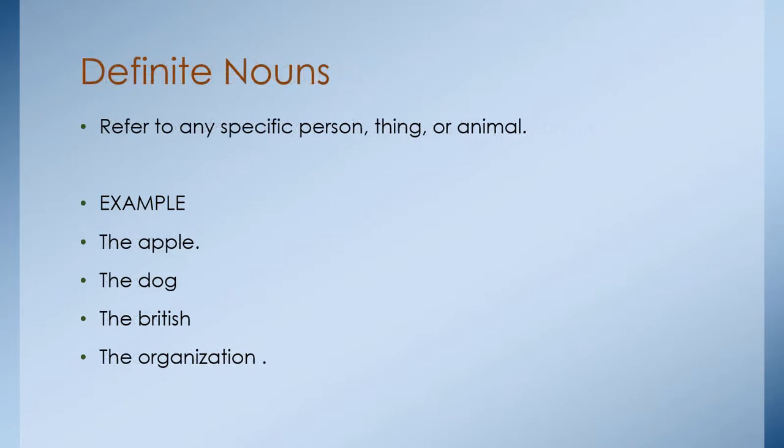Definite noun refers to any specific person, thing or animal. For example, the same example, but if I told you THE apple is because I am showing you or I am specifically telling you something about the apple that we are talking about. That dog. It could be your dog, my dog, but it could be a specific. That British or the organization. We are talking about specific thing.